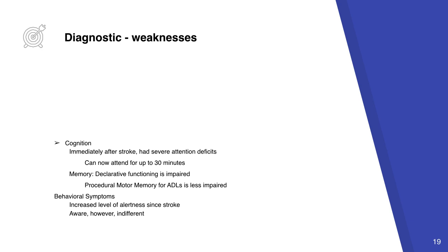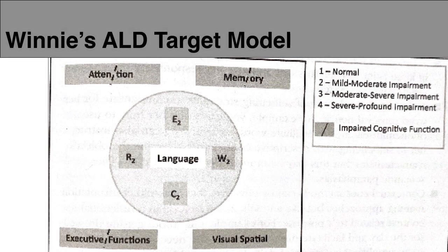Winnie also presented with extreme lethargy and poor level of awareness upon entry — she would frequently doze off mid-conversation — however her level of awareness has increased since initial monitoring. She is aware of her receptive and expressive deficits but appears indifferent to them. Following the CLQT+ and Boston Naming Tests, we created Winnie's ALD Target Model. Her non-linguistic skills of attention, memory, and executive functions are impaired, while visuospatial skills remain intact. Her language abilities of reading, writing, expression, and comprehension are mild to moderately impaired.